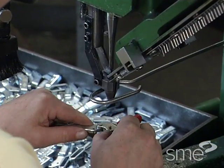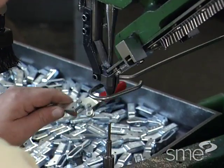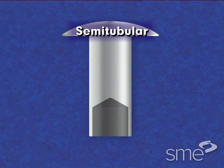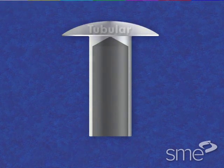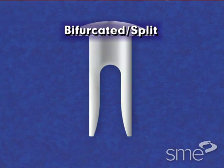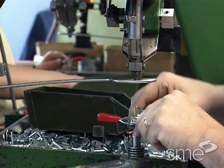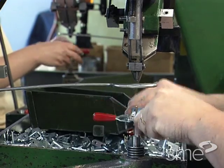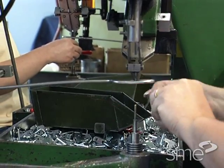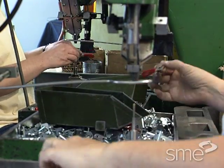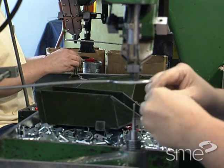Some basic rivet types include solid, semi-tubular, tubular, and bifurcated or split. An advantage of rivets is that they can be set rapidly and economically in both manual and automated assembly operations.